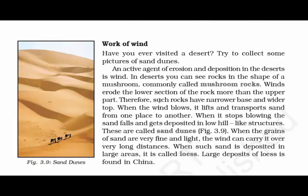Last but not the least, let's read about the work of wind — another agent of erosion and deposition. Usually in deserts, you'll see rocks shaped like mushrooms, so they are called mushroom rocks. The reason is that wind takes away the lower section of the rock more than the upper part. Therefore, such rocks have a narrower base and wider top. When the wind blows, it takes away sand from one place to another, and when it stops, the sand falls and is deposited, becoming low hills called sand dunes.